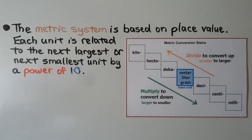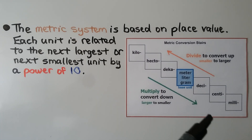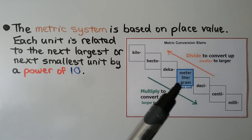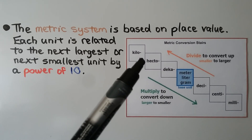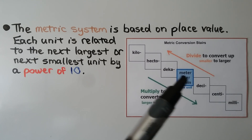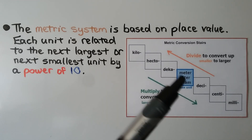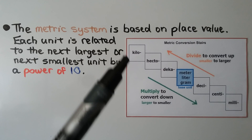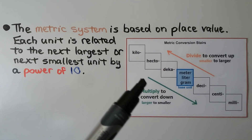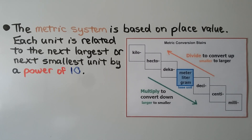The metric system is based on place value. Each unit is related to the next largest or next smallest unit by a power of 10. I have a copy of this on my Joanne School Facebook page in the photo section — I think it's in a folder called metric. Here's our base unit: it's either a meter, a liter, or a gram, and then we've got these prefixes. We divide to convert up from a smaller unit to a larger unit, and we multiply to convert down from a larger unit to a smaller unit.